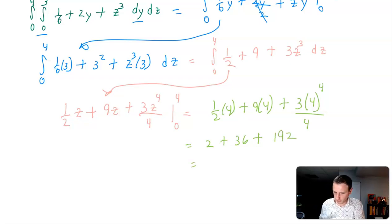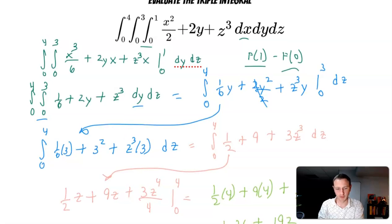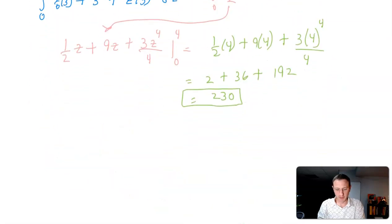Combine all that. 2 plus 36 plus 192 gives us an answer of 230. So there it is. The answer to the triple integral 0 to 4, 0 to 3, 0 to 1, that whole statement, dx, dy, dz comes out to be 230.